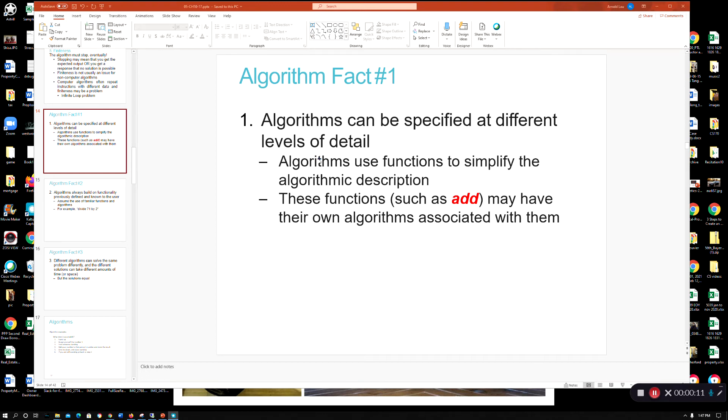So we left off here with algorithms. This fact one is basically just talking about the different levels of detail for algorithms. For example, you might have something that's fairly well-known in terms of algorithm and it's part of a more complex algorithm that you're trying to do.